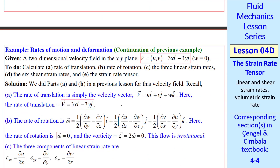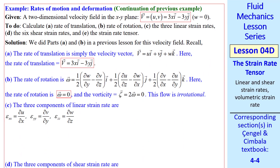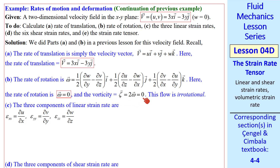Let's do an example problem. We have a simple velocity field 3x·i minus 3y·j, and it's two-dimensional so w equals zero. Let's calculate the rate of translation, rate of rotation, the three linear strain rates, the six shear strain rates, and the strain rate tensor. We did parts A and B in a previous lesson. The rate of translation is simply the velocity vector. The rate of rotation in Cartesian coordinates gave us omega equal to zero, and therefore vorticity is also zero — this flow is irrotational.